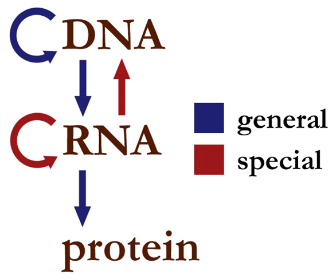The dogma is a framework for understanding the transfer of sequence information between information-carrying biopolymers, in the most common or general case in living organisms. There are three major classes of such biopolymers: DNA, RNA, and protein. There are 3×3=9 conceivable direct transfers of information that can occur between these.